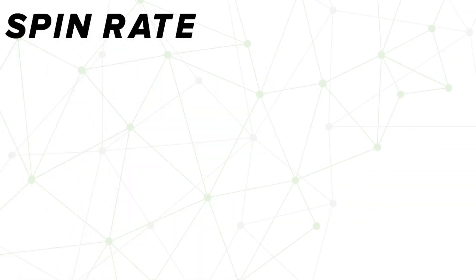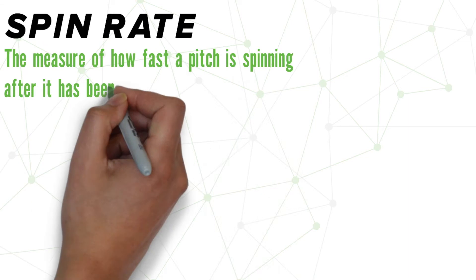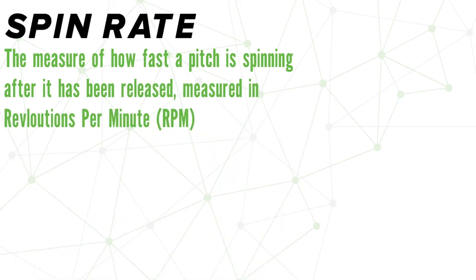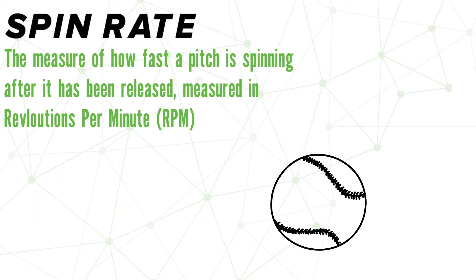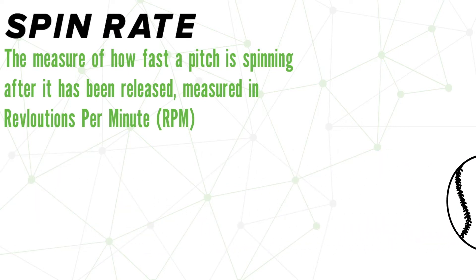Spin rate is the measure of how fast each pitch is spinning after it has been released. It is measured in revolutions per minute — in simpler terms, this is the measure of how many times the ball makes a complete revolution around its axis.